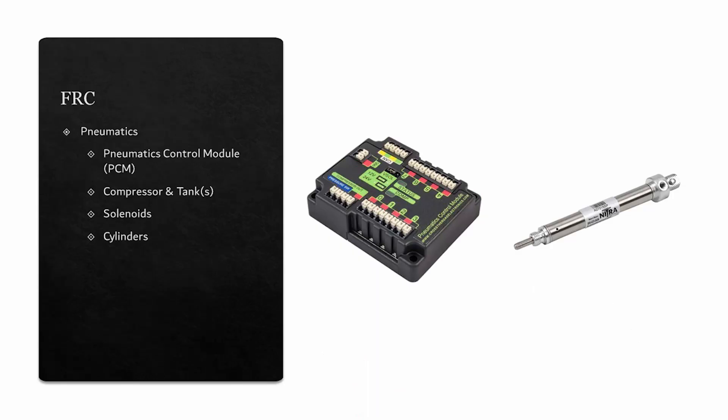One special thing that FRC has is the ability to use pneumatics on a robot. Because of this, we have many special pneumatic components. First is the pneumatics control module, which controls all of the pneumatic components on the robot. Next, there are compressors, which compress air. The compressed air is then stored in tanks on the robot.